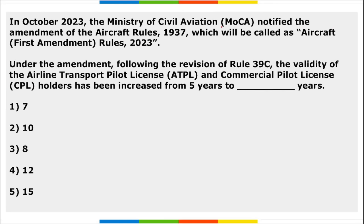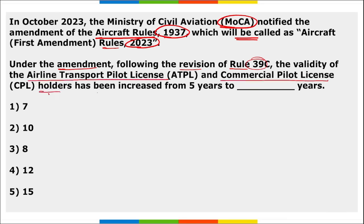The Ministry of Civil Aviation notified an amendment to the Aircraft Rules 1937, to be called Aircraft Rules 2023. Under Rule 39C, the validity of the Airline Transport Pilot License and Commercial Pilot License has been increased from five years to ten years — right option is option two.